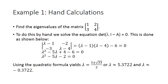When we have the quadratic equation lambda squared minus 5 lambda minus 2 equals zero, we can use the quadratic formula and get solutions of 5 plus or minus the square root of 33, all over 2. So lambda is approximately 5.37 or negative 0.37.